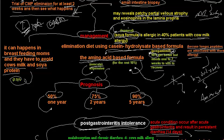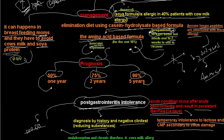Importantly, not only formula but also breastfeeding can lead to cow's milk protein allergy in some circumstances. This occurs because cow's milk protein can be present in the mother's breast milk. In this case, the mother must avoid both cow's milk proteins and soya proteins in her diet.